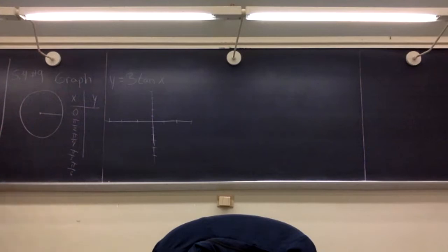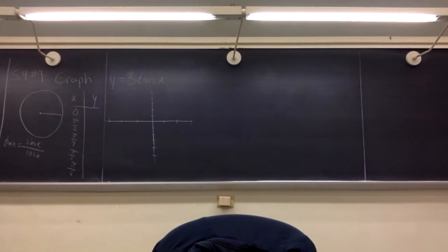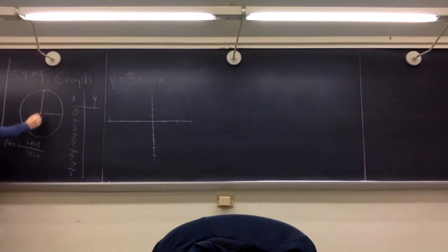The tangent is a really good starting place for the reason that it's undefined at certain angles. Do you remember which angle tangent is undefined at? We can always think of tangent as sine of x over cosine of x — that's by definition what it is. When we go around the circle and reach pi over two, sine is one and cosine is zero, so at pi over two we have an undefined value.